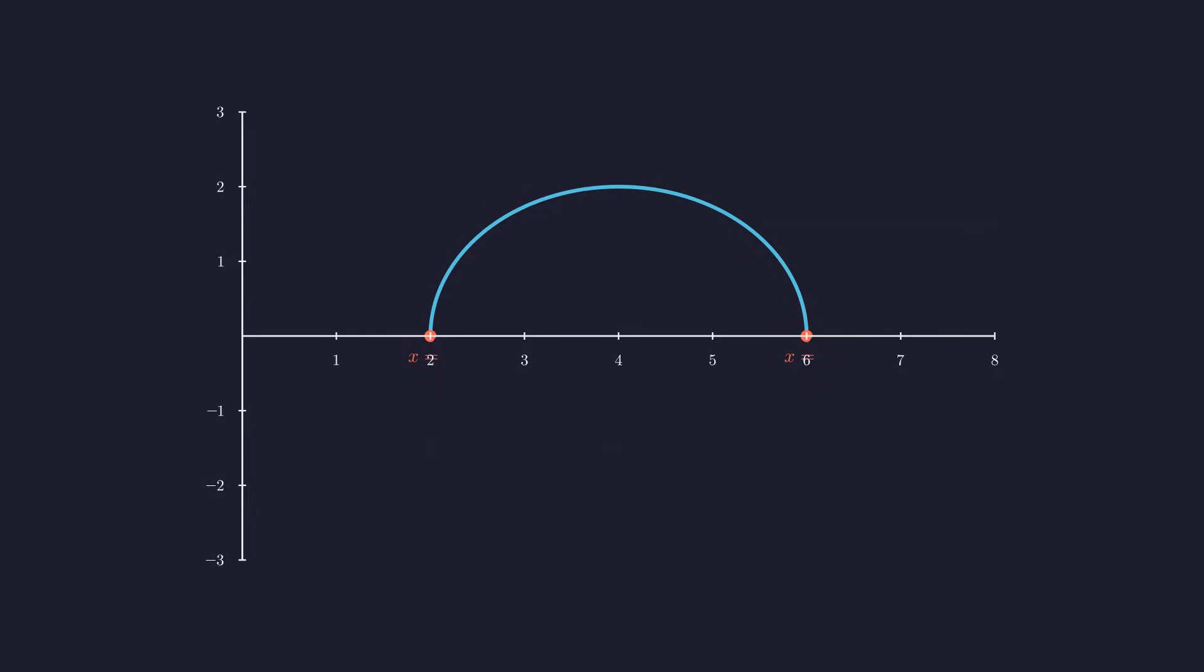The limits of our integral are from 2 to 6. Notice that the center is at x equals 4 and the radius is 2. So these limits correspond exactly to the endpoints of the semicircle's diameter. Therefore, the value of the definite integral is precisely the area of this shaded region, which is the area of the entire semicircle.